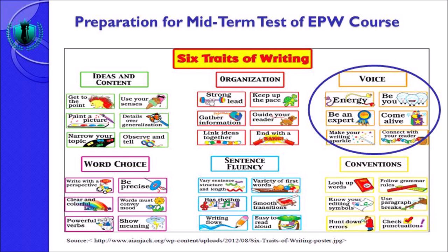Agar connect dengan pembaca, anda harus memberikan tulisan anda kepada pembaca yang tepat. For example, if you write an article about economy but you give it to me, perhaps I'm not going to be connected with that kind of thing. But if you write about language, I will understand it thoroughly. Now we come to the next aspect: word choice.